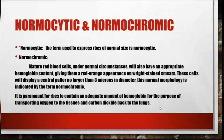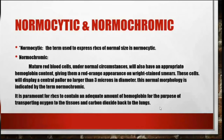The mature RBC will have an appropriate hemoglobin content, giving them a red-orange appearance on the red stain smear. This normal morphology is indicated by the term normochromic. It is paramount for RBCs to contain an adequate amount of hemoglobin for the purpose of transporting O2 to the tissues.